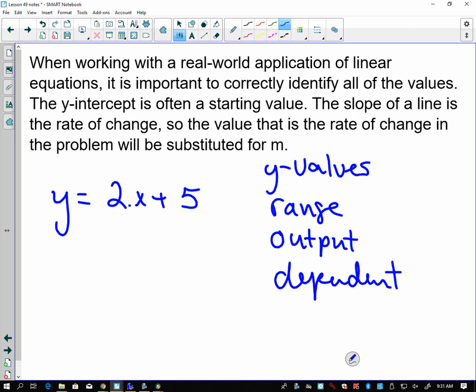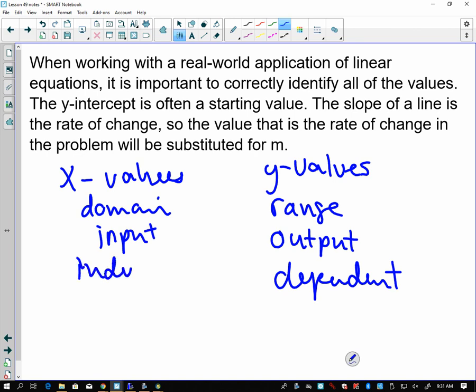So these things are important to understand. Our x values are our domain, our input, and our independent variable. And it's amazing to me in math how one thing can be four things. But if you understand that one thing is also these other things, it kind of helps you understand how those things work in different environments.